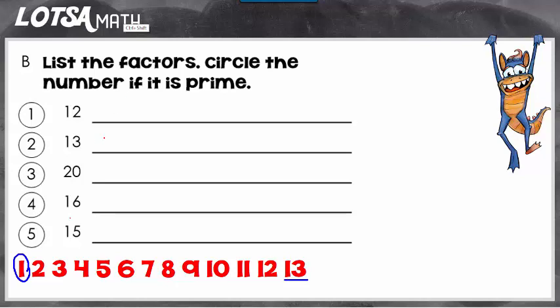So the only factors of 13 are 1 and 13. Because the only factors are 1 and itself, number 13 is prime. We're going to circle number 13 because it's a prime number.